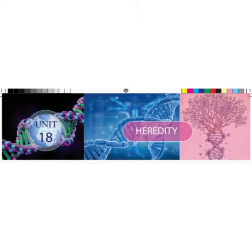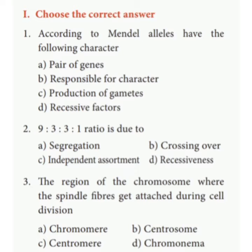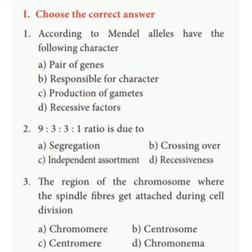Unit 18: Heredity. Choose the correct answer. First, according to Mendel, alleles are responsible for a character. Second, the 9:3:3:1 ratio is due to independent assortment. Third, the region of the chromosome where the spindle fibers get attached during cell division is the centromere.